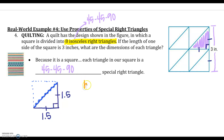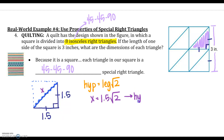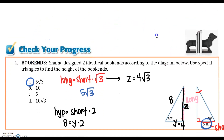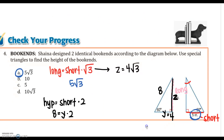So I know 45-45-90: my hypotenuse equals my leg times the square root of 2. We need to remember those formulas. My hypotenuse, which I'll call x, equals my leg 1.5 times the square root of 2, and I am finished. My hypotenuse equals 1.5 square root of 2, and my leg equals 1.5 inches. Don't forget to use your units. Try your checkpoint right below that. There are your answers. And that concludes our unit on special right triangles.